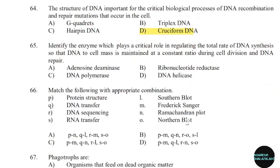65th question: Identify the enzyme which plays a critical role in regulating the total rate of DNA synthesis so that the DNA-to-cell-mass ratio is maintained at a constant ratio during cell division and DNA repair. Correct answer: Option B.